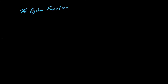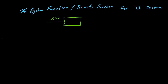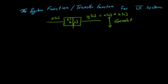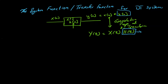This video deals with the system function, sometimes also referred to as the transfer function, for discrete time systems. If we have an input x passed through an LTI system having impulse response h, then h characterizes the system fully. The output y is equivalent to x convolved with h. From the convolution property of the Z-transform, Y(z) equals X(z) times H(z), so H(z) is our transfer function and also characterizes the system fully.